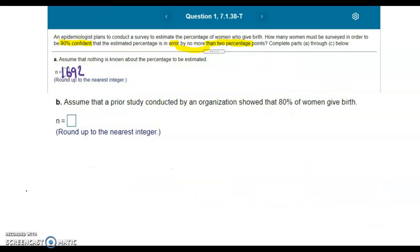For the second part of the problem, part B, we're assuming that a prior study conducted by an organization showed that 80% of women give birth. That means that our point estimate, P hat is 0.8.